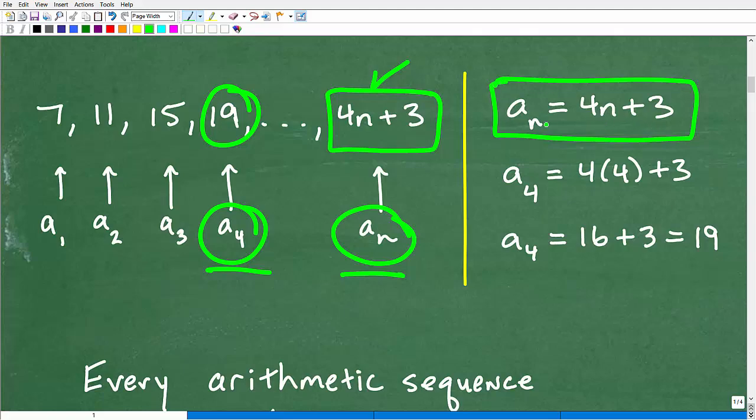So this will give us the value of any term. So in this case, we want the fourth term in this sequence. So we want a sub 4. So we're going to replace the n. n here is the term. Okay? So we want the fourth term. So n is equal to 4. So we're simply going to follow this formula. 4n plus 3, so 4 times 4 plus 3. So 4 times 4, of course, is 16. 16 plus 3 is 19. So the value of the fourth term is 19.